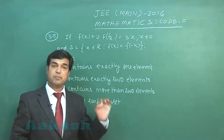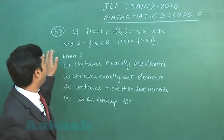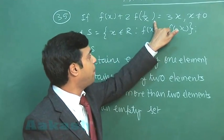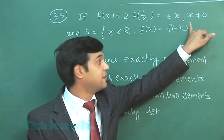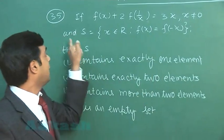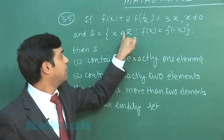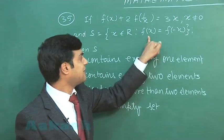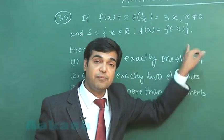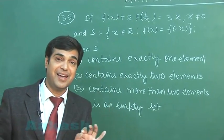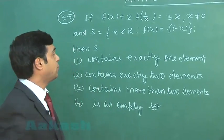Now, the question number 35, question from functions. If f(x) + 2f(1/x) = 3x, x ≠ 0 and S is a set given as {x ∈ R : f(x) = f(-x)}, then how many elements are there in set S? This is the question. So, let us start it.